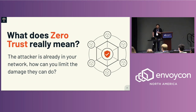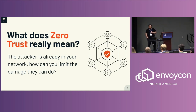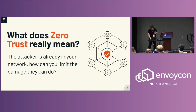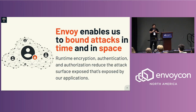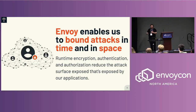I write standards around zero trust, and I hate the phrase zero trust — it's an awful phrase. It's not well understood, but in short, the attackers are already in the network, and therefore our job is to bound attacks in space and in time, because traditional perimeter security doesn't really do that for us. Envoy enables us to do this, whether we use it in the mesh as a sidecar, at ingress for traffic coming in, or as an egress proxy for things going out. Envoy is a phenomenal tool for helping bound attacks in space and time at the network level.